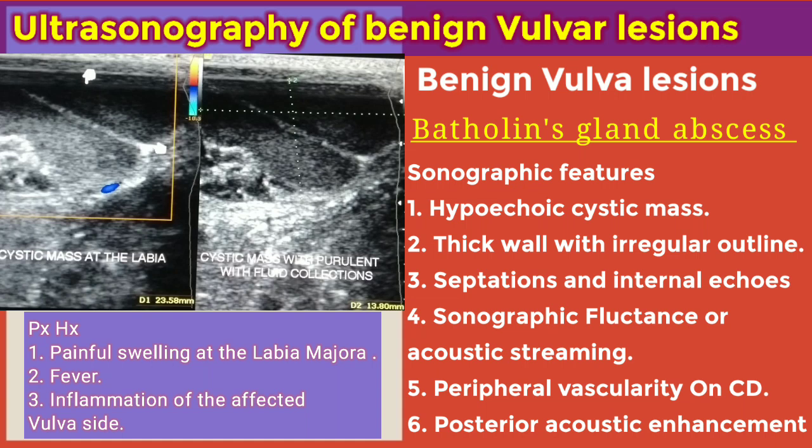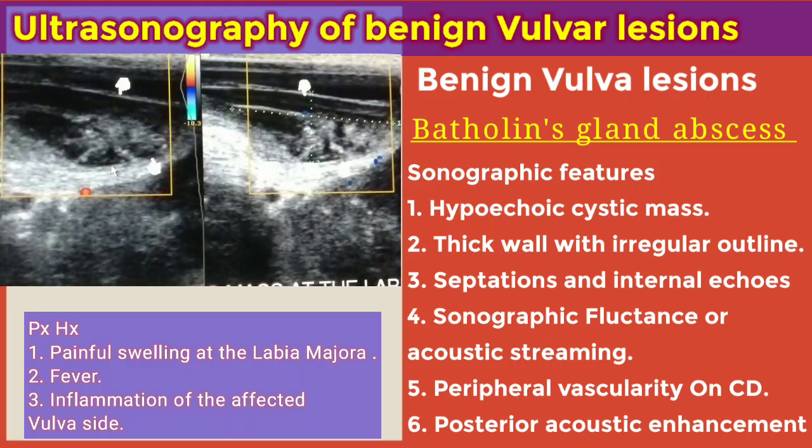The sonographic features of Bartholin's gland abscess include a hypoechoic mass — as we can see on the screen — with thick walls. The arrows are pointing at the septations. There will be an irregular outline and internal echoes, as well as presence of sonographic fluctuance or acoustic streaming, that is, movement of the purulent fluid collections seen within the Bartholin's gland abscess.